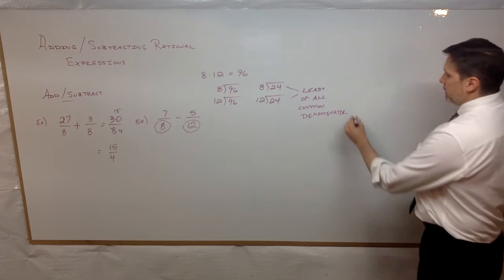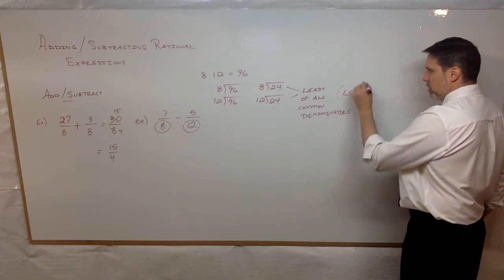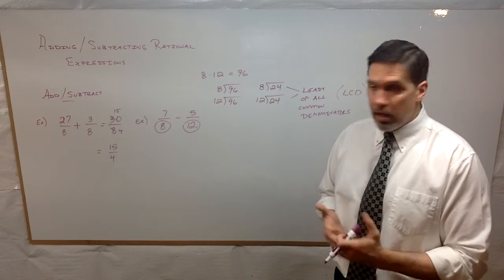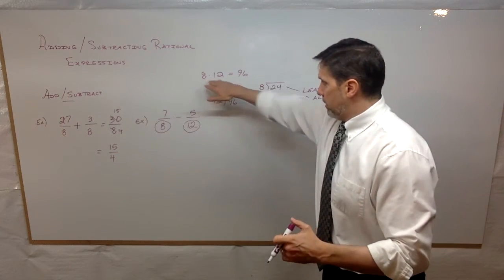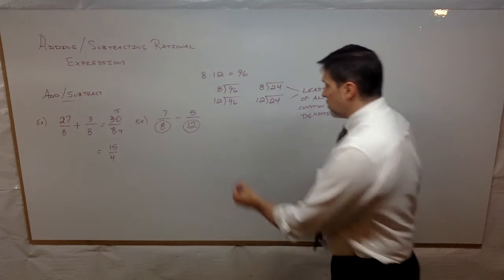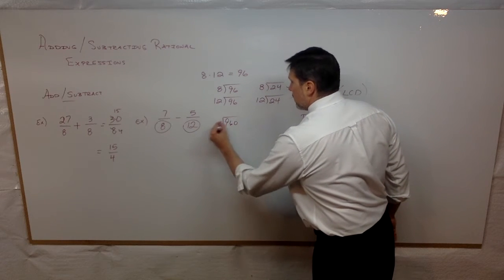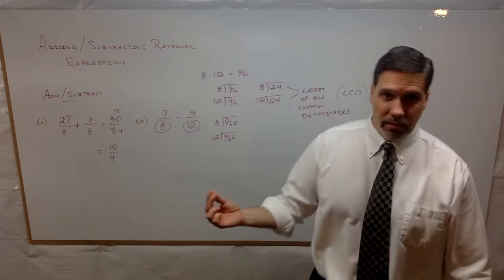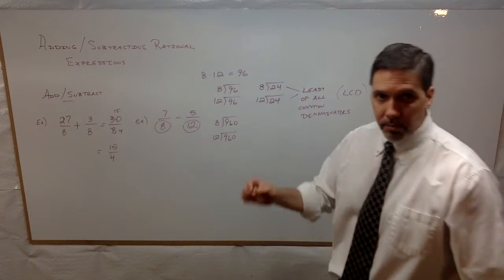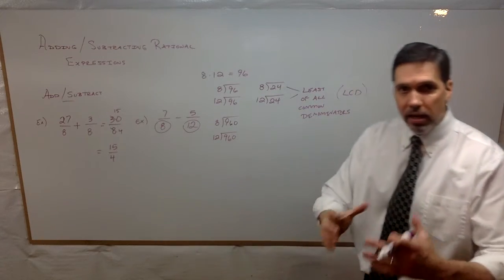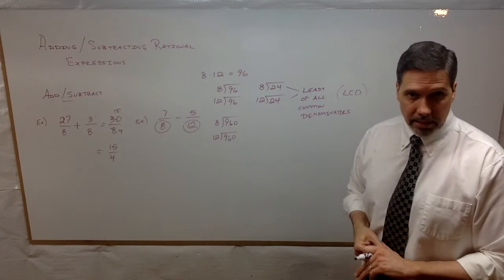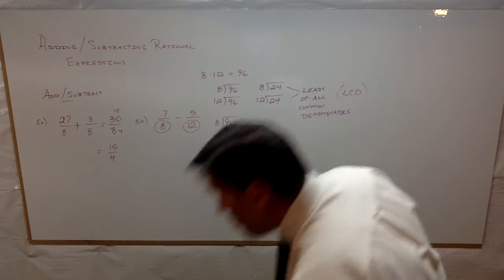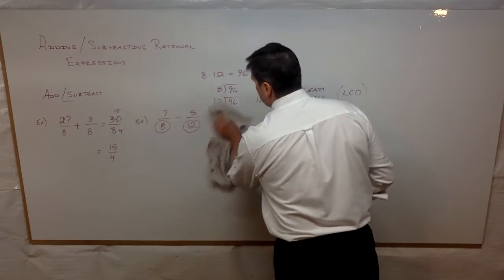So 24 is the least of all common denominators — we call this the LCD, the least common denominator. What would 96 be called? That would just be called a common denominator. We could even multiply 96 times 10 to get 960 — 8 goes into 960, 12 goes into 960 — we could use that if we wanted. But we're not looking for a common denominator per se; we're looking for the least of all the common denominators, which in this case is 24.